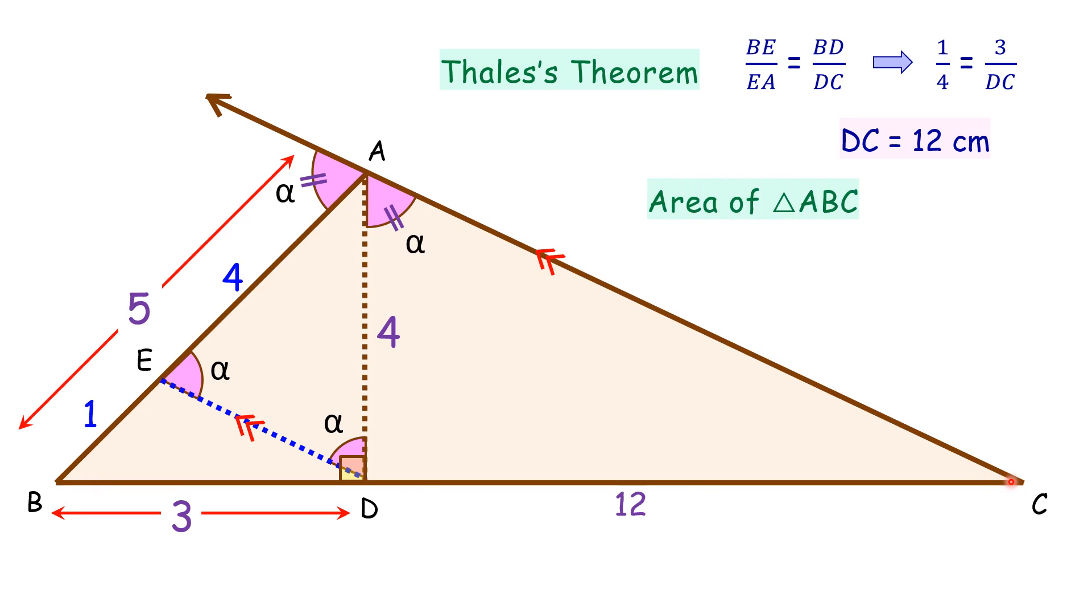So putting the formula for area of triangle, that is half of base into height. Here the height is 4 and the base is 15 centimeters. Solving, we'll get area of triangle as 30 centimeter square, and that's our answer.